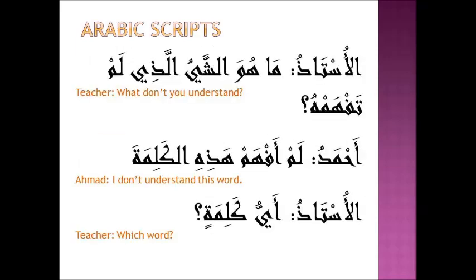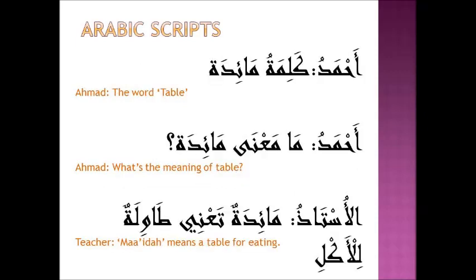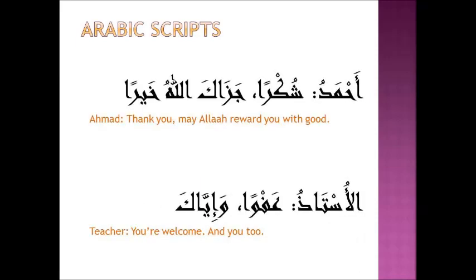أُسْتَاذ: أَحْمَدُ! أَحْمَدُ! مَا هُوَ الشَّيْءُ الَّذِي لَمْ تَفْهَمْهُ؟ أَحْمَد: لَمْ أَفْهَمْ هَذِهِ الْكَلِمَةَ. أُسْتَاذ: أَيُّ كَلِمَةٍ؟ أَحْمَد: كَلِمَةَ مَائِدَة. مَا مَعْنَى مَائِدَة؟ أُسْتَاذ: مَائِدَة تَعْنِي طَاوِلَة لِلْأَكْل. أَحْمَد: شُكْرًا، جَزَاكَ اللَّهُ خَيْرًا. أُسْتَاذ: عَفْوًا وَإِيَّاك.